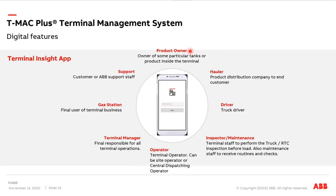Another digital feature is that we have developed an app — what we call the Terminal Insight App — developed to link the different actors in the logistics business around the terminal: the product owner, haulers, drivers, inspectors, maintenance people, operators, terminal managers, gas station owners, and of course support. There is a link between all of them through the app. As an example: the gas station manager can receive a notification through the app with the estimated time of arrival of the truck, making it possible to optimize preparation of the gas station to receive the product. The acknowledgment of delivery is done by reading a QR code printed on the bill of lading through the app, giving a fully paperless process. This acknowledgment can also be sent to the product owner, the hauler, and the terminal manager — so everyone knows that the product has been delivered.